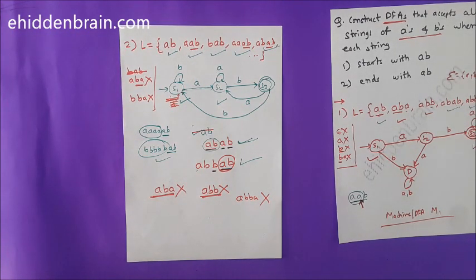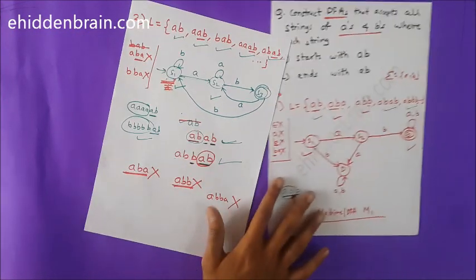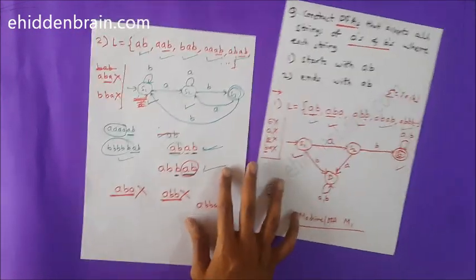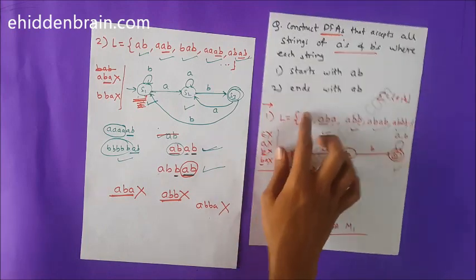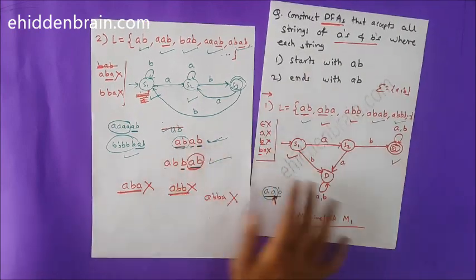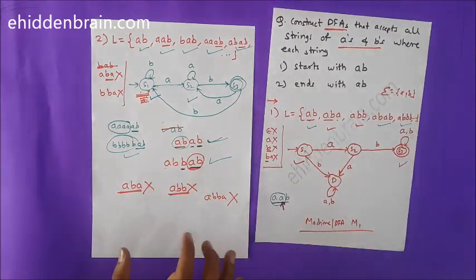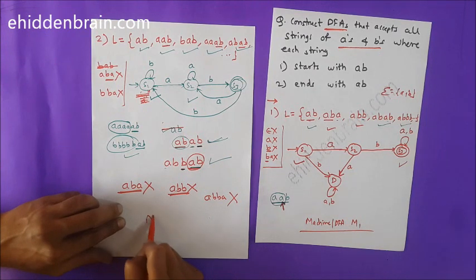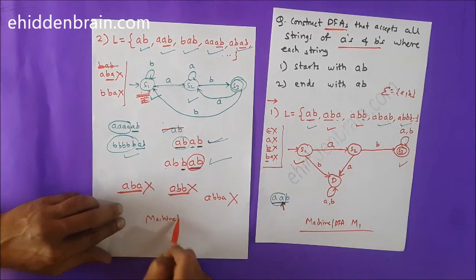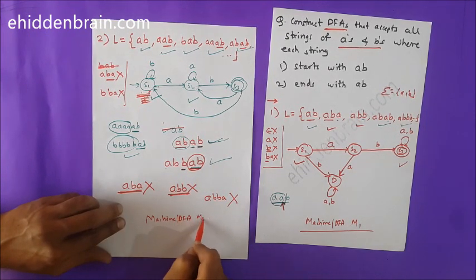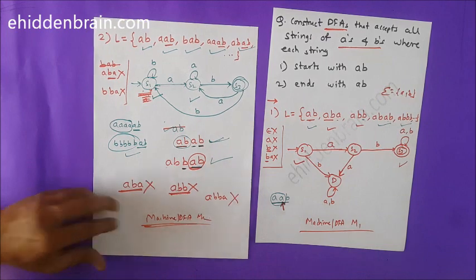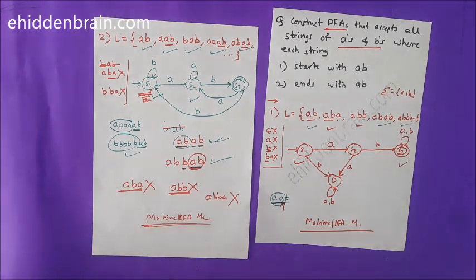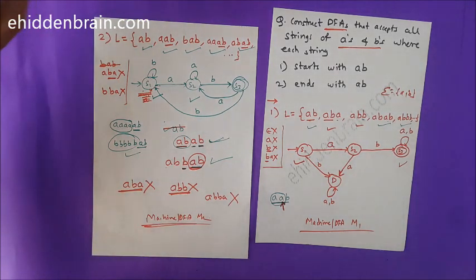Thank you very much. I hope you understood the difference between starts with AB and ends with AB. The first is machine M1 for starts with AB, and this second machine is DFA M2 for ends with AB. Thank you.